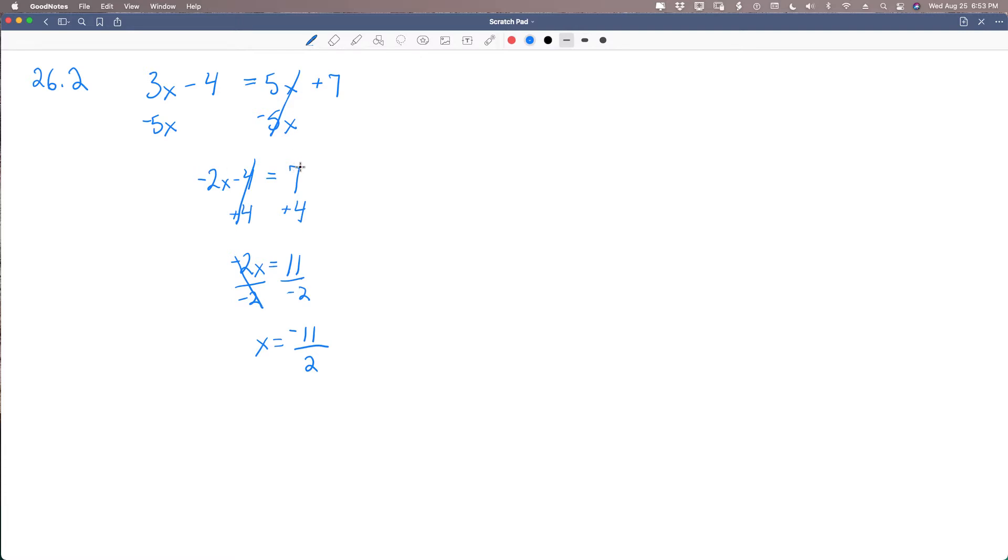So the reason they did it like this in the book was to show you that it doesn't matter which side you put the variable on. You could solve with a variable on this side or with a variable on this side. It doesn't matter. You're going to get the same answer if you do your math correctly. And you might even want to check your work by solving it both ways.